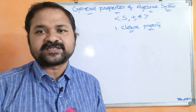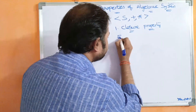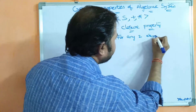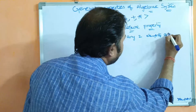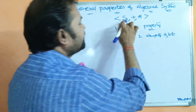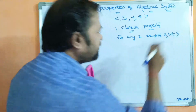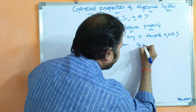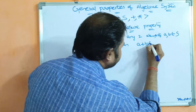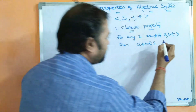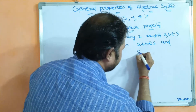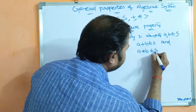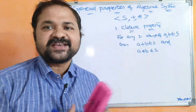Closure property means we have to take any two elements from the set. For any two elements a, b belonging to S, closure property states that a plus b belongs to S and a star b belongs to S. If both conditions are satisfied, then we say it satisfies closure property.